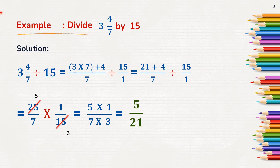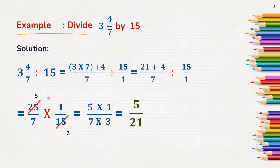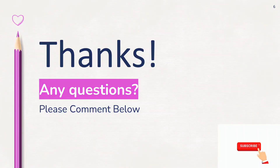So, to divide a fraction by a whole number: first, convert the division sign into a multiplication sign and write the reciprocal of the whole number. Then multiply numerator with numerator and denominator with denominator, and if possible, simplify. This is how we divide a fraction by a whole number. Students, I hope you have understood. Thank you, and keep supporting for more such videos.